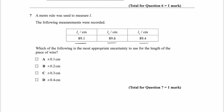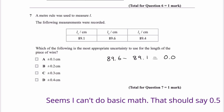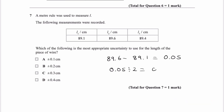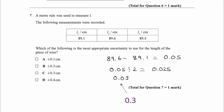We take our biggest value and subtract our smallest value, which gives us 0.05. Range divided by 2 gives us 0.025. Uncertainty is usually expressed to 1 significant figure, and we usually round up when it comes to uncertainties, so it becomes 0.03. Our answer is therefore C.